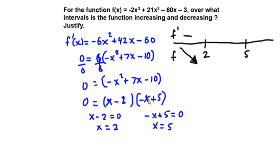Between 2 and 5, we can take 3. Well, 3 minus 2, that's going to be positive. And then -3 + 5, that's positive. So we have positive, positive.